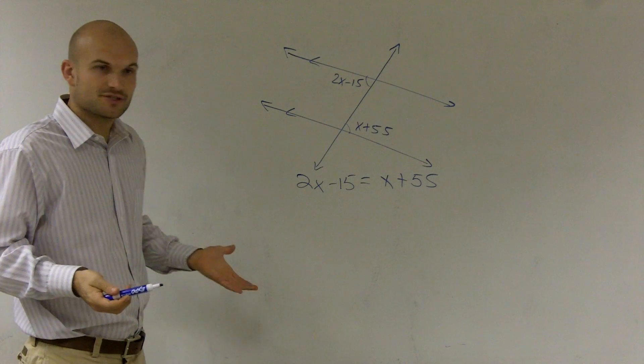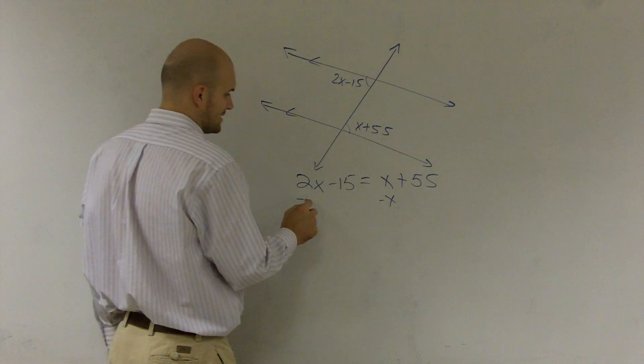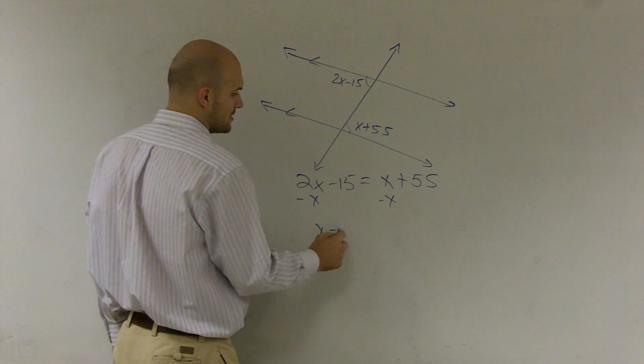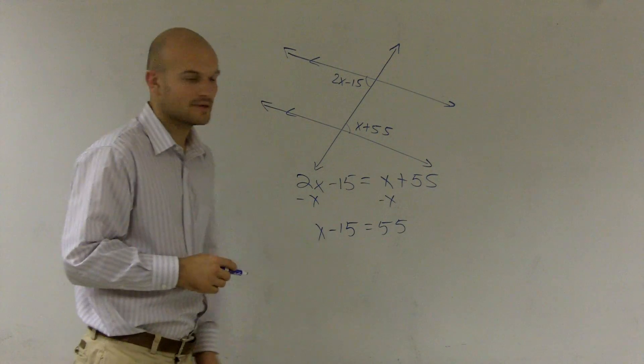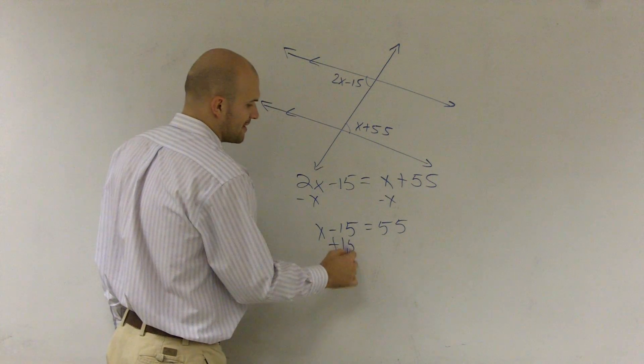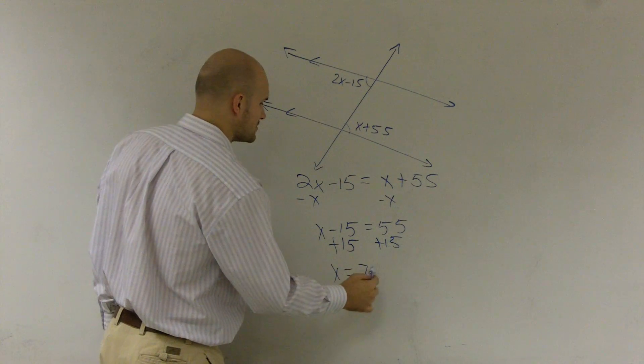Now what I need to do is solve. I have an x on both sides. I need to get the x on the same side. So I'll subtract from the x. Therefore, I'm left with x minus 15 is equal to 55. I will now get rid of my 15. Therefore, I get x equals 70.